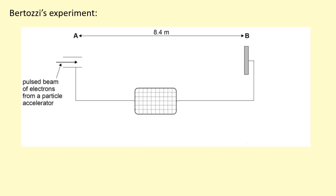We have a particle accelerator on the left-hand side, and this produces a beam of electrons. These electrons travel from point A to point B, which is approximately 8.4 meters apart. We can figure out the time it takes to go from A to B...